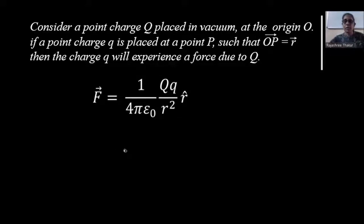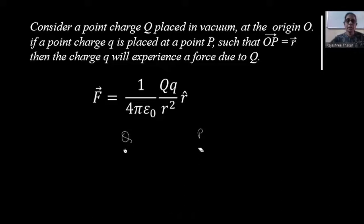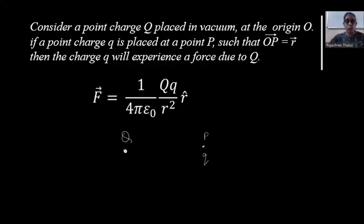Suppose I have a small point charge capital Q here. At this point P, suppose I bring a charge q. Now this charge q experiences a force due to charge Q. Now if I remove this test charge, what remains here in the vicinity? In this space, there is something because of which when I bring a small charge q at this point, it experiences a force. That something is what we call as electric field.